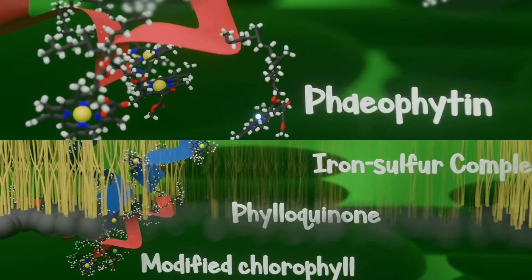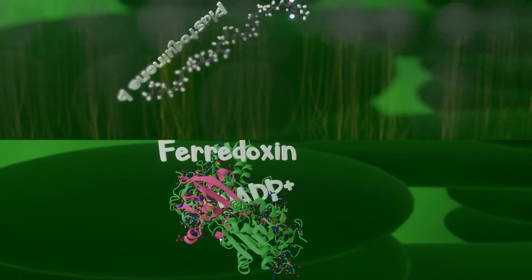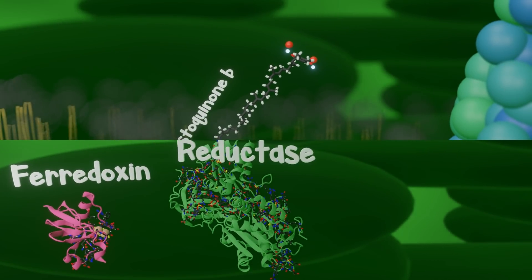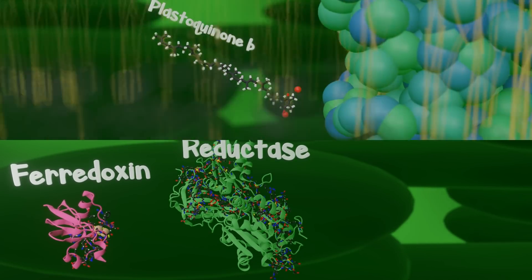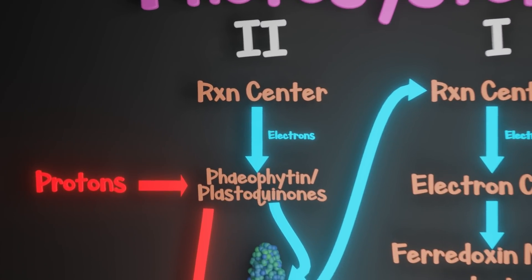Those are the two roles of the two photosystems, but we are missing two more key processes in photosynthesis. The first is something you've hopefully questioned. How does photosystem II's reaction center replenish its electrons?